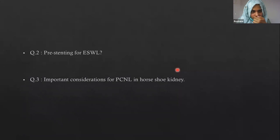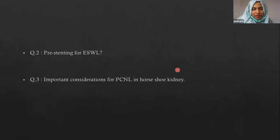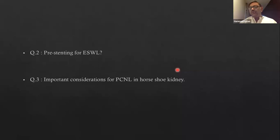If stone burden is high and PCNL is decided upon: important considerations for this anatomical variant include that upper pole puncture should be preferred and that aberrant vessels are present, so reviewing the CT scan is important. Thank you to Dr. Rana for these two very nice cases illustrating important considerations when treating patients with similar stone burdens in various parts of the kidney using appropriate management options tailored to each patient.